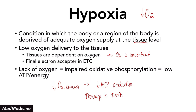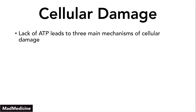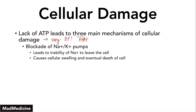Now let's talk about the topic we're discussing today: cellular damage. Cellular damage is essentially a type of extensive stress being put on the cell that our cell cannot handle, and it leads to a damaged state. Lack of ATP is the main culprit here, and it's going to lead to three main mechanisms of cellular damage. All three of these are very high yield — you should remember this because it's a very basic concept you need to know, or you'll get tested on it in your exams. The first mechanism of cellular damage is blocking the sodium-potassium pumps.